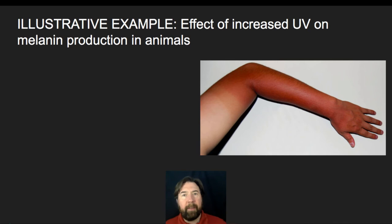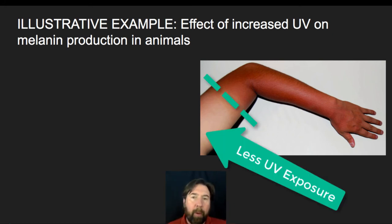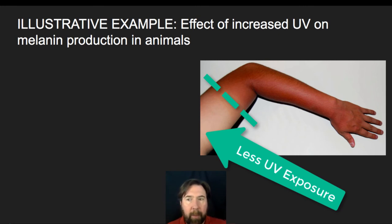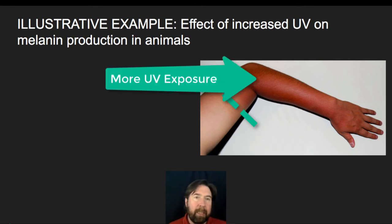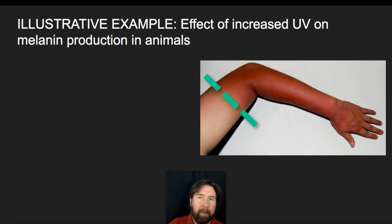Another example is the effect of increased UV light on melanin production in animals. Looking at an arm, the upper portion with very low UV exposure shows a lighter skin tone, while moving down the arm where there is increased UV exposure you can see increased melanin production. This is again a type of plasticity leading to different phenotypes within the same individual.